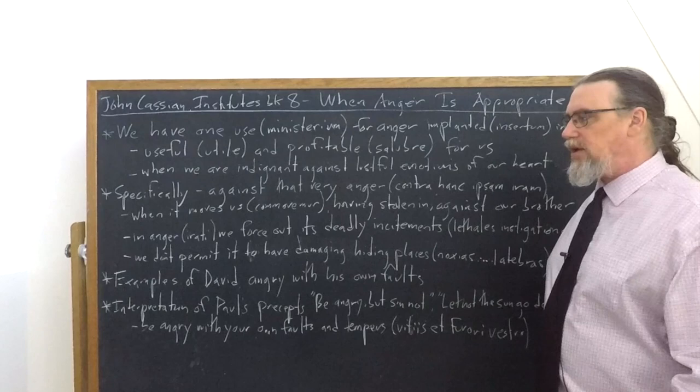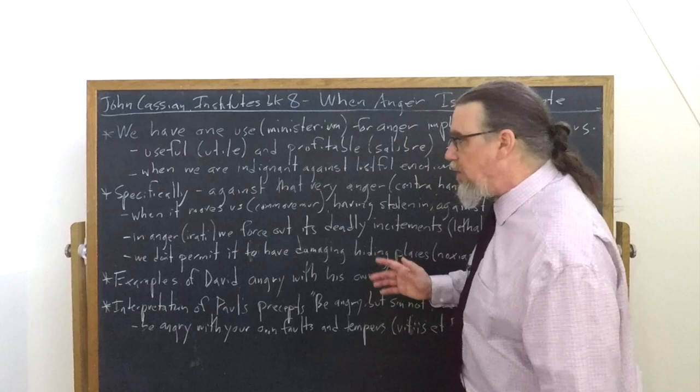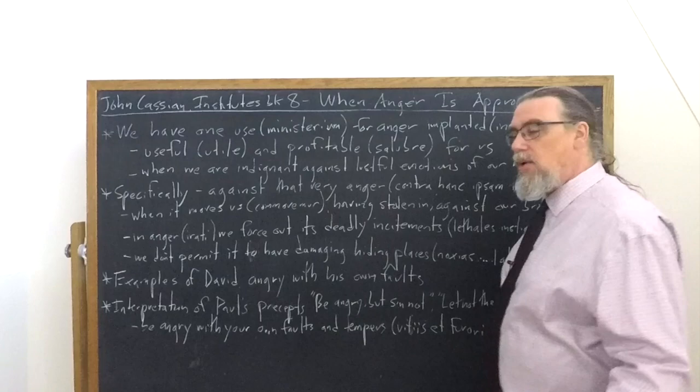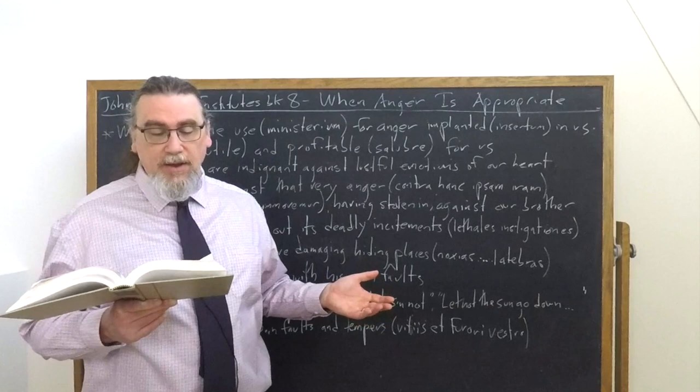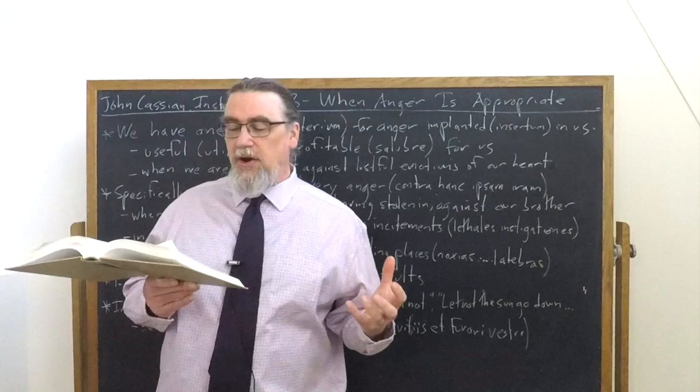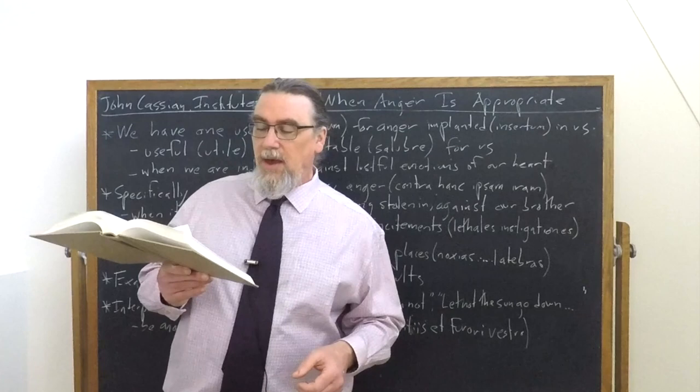And then interestingly, Cassian is going to bring up some discussions coming from Paul's letter to the Ephesians, which have these two very famous precepts, meaning things that you're supposed to do. Be angry, but sin not. And let not the sun go down on your anger. What is this supposed to mean? He says, the next verse explains this very clearly. The things you say in your hearts, be sorry for them on your bed. That is whatever you think of in your hearts. When sudden and nervous excitements rush in on you, correct and amend this with wholesome sorrow, lying as it were on a bed of rest, removing by the moderating influence, all noise and disturbance of wrath. And then he says the blessed apostle, when he made use of the testimony of this verse and said, be angry and sin not, added, let not the sun go down in your wrath, neither give place to the devil.